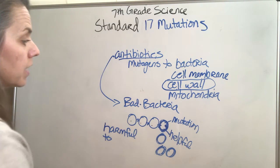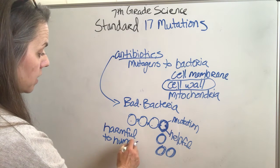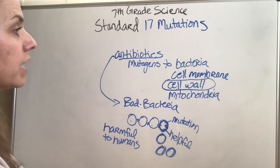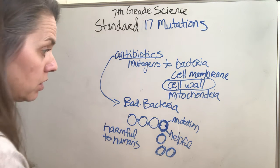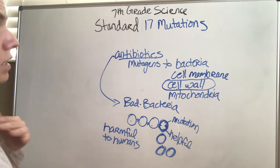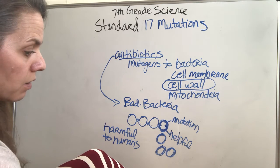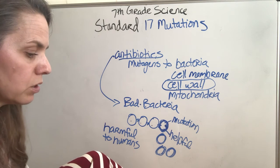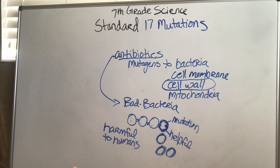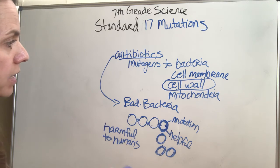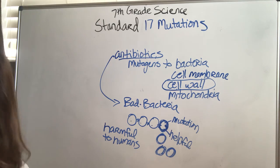Why is this a problem? Because the bacteria itself is harmful. So if they have reproductive success, we don't — we get taken out. If this bacteria is one that's going to kill us, then species survival in us is going to be reduced. It might kill children, so they cannot have any children of their own. So that's harmful to humans, while it's helpful to the bacteria. That's all for Standard 17 — mutations.